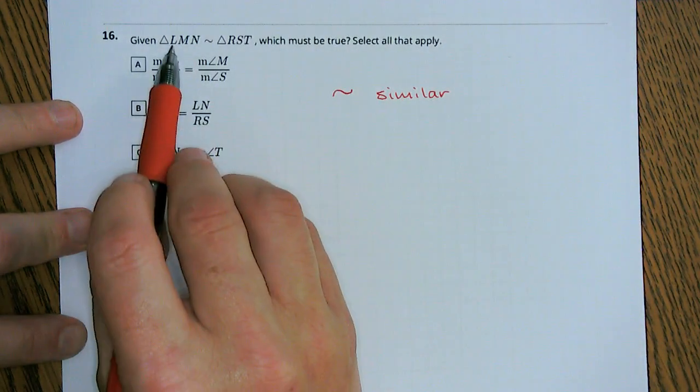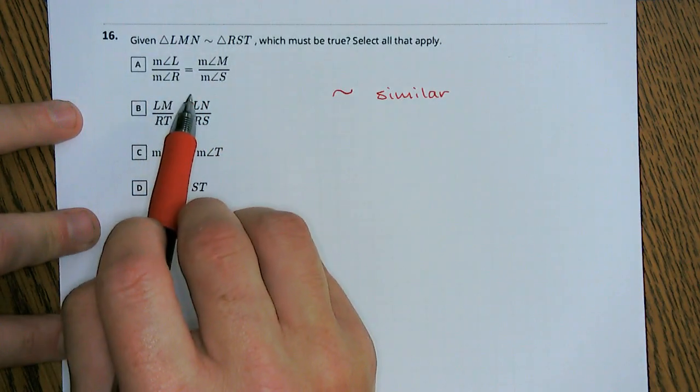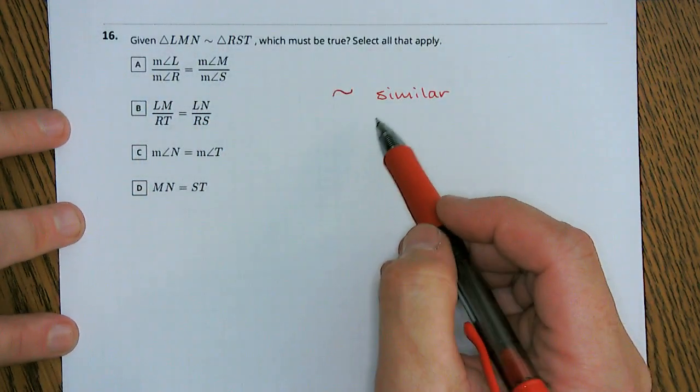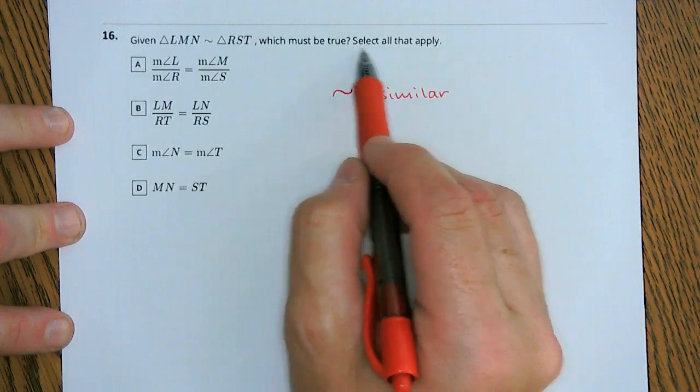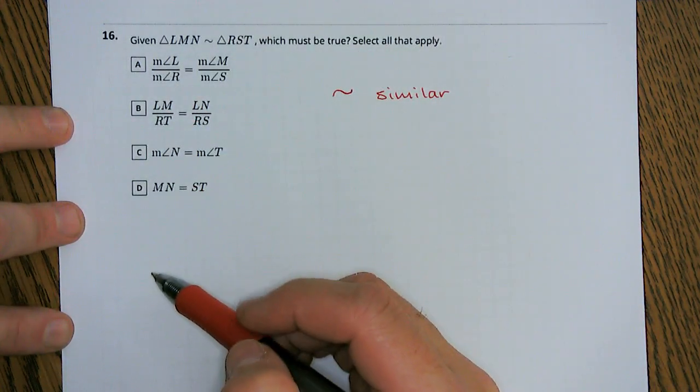Which of these must be true? So triangle LMN is similar to triangle RST, what must apply here? So it says select all, so more than one of these is correct.